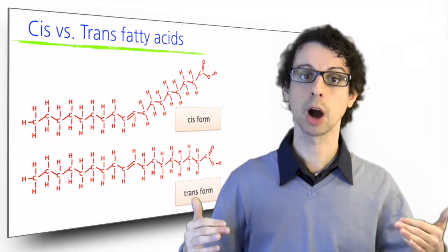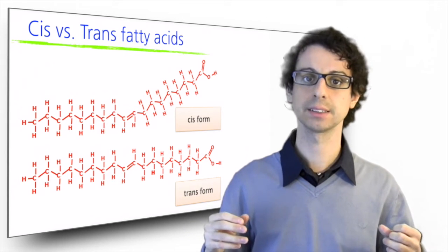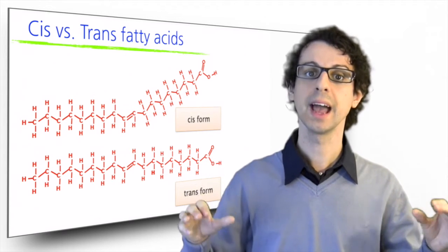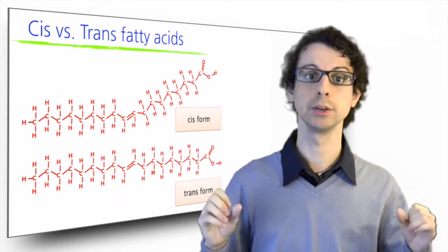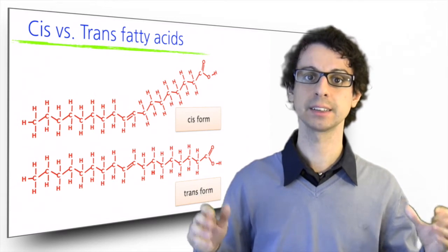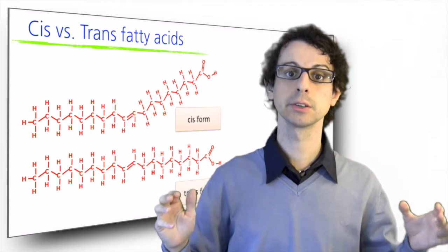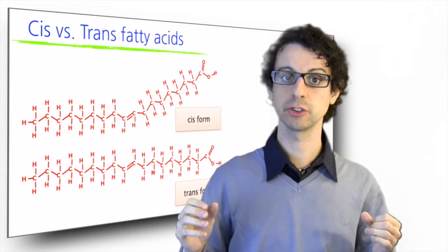For example, it could be more compact and solid at room temperature. Trans fatty acids are mostly man-made and rarely occur naturally in food, although there are some naturally occurring short-chain trans fatty acids in milk, but most of them come from human processing of food, and in particular the process of fat hydrogenation, which we will see later.